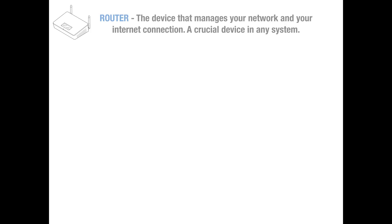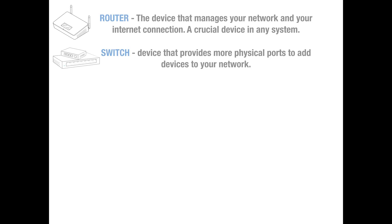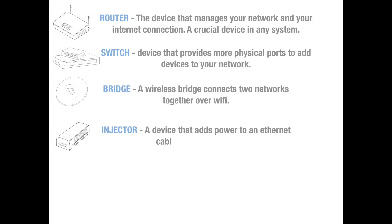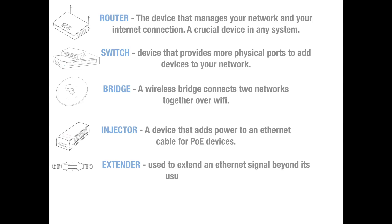To summarize: a router is the device that manages your network and internet connection — it's a crucial device in any system. A PoE switch is a device that provides more physical ports to add devices to your network. A wireless bridge connects two networks together over Wi-Fi. A PoE injector adds power to an ethernet cable. An extender is used to extend an ethernet signal beyond its usual 100m limitation. And finally, a power line adapter is used to turn your home's electrical wiring into a network.